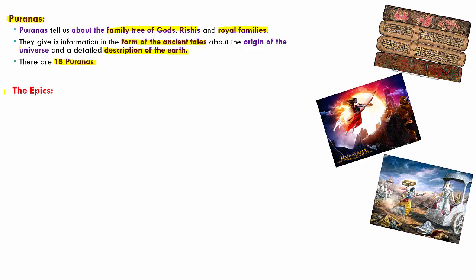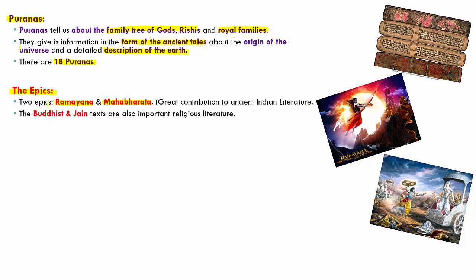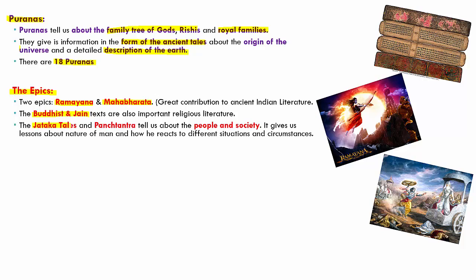Then we have the epics, which are another very rich literary source of ancient India. The two epics are the Ramayana and the Mahabharata. Apart from these, we also have Buddhist and Jain texts, which are important religious literature. We also have the Jataka tales and the Panchatantra, which tell us about the people and society and give us lessons about the nature of man and how he reacts to different situations and circumstances.